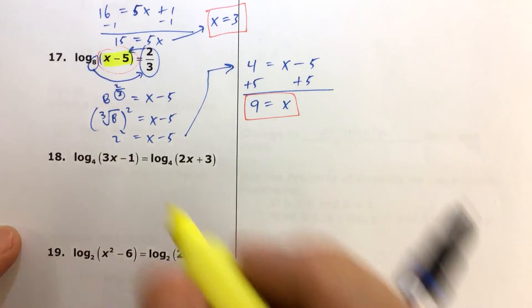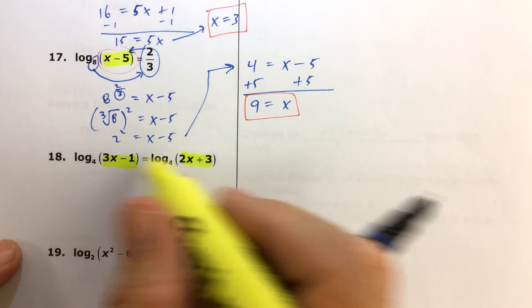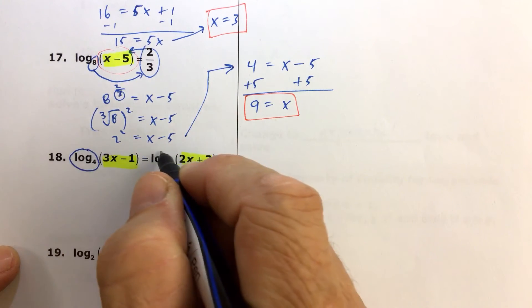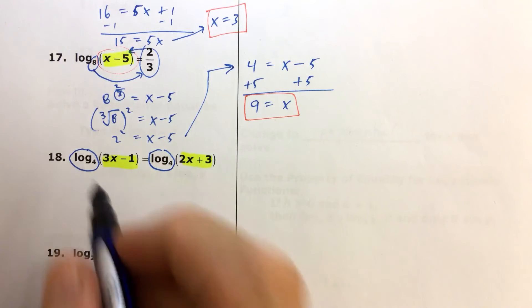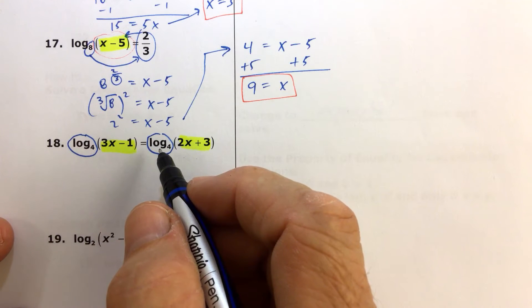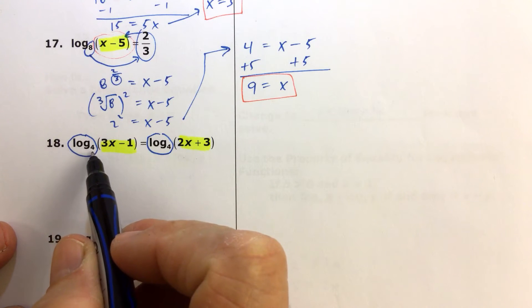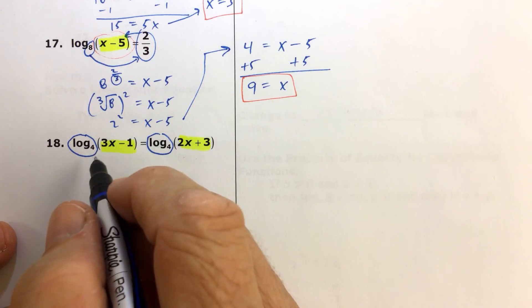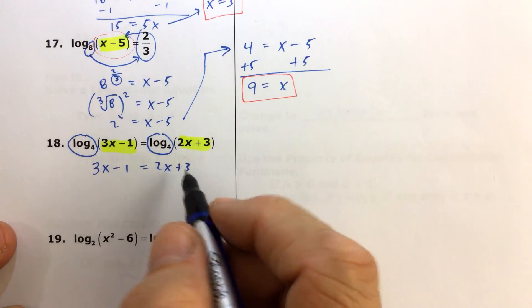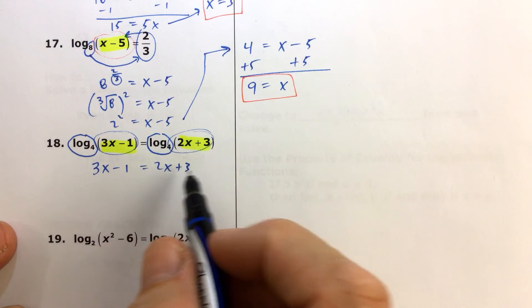So for number 18, we find our variables both locked up in the log expressions, but we also remember the property that we learned earlier. If we have the log base 4 on both sides, you can't divide by the log base 4, so don't do that. And don't think you just cross them off, but in reality, what you're doing here is that you're using the property that says that if the log on one side has the same base as the log on the other side, then the answers have to be the same. So what you're taking the log of has to be the same thing. So if the logs are equal, then the answers are equal.